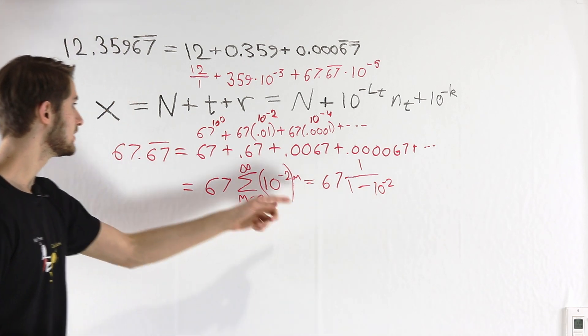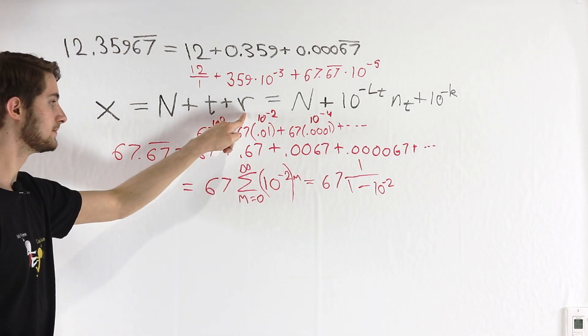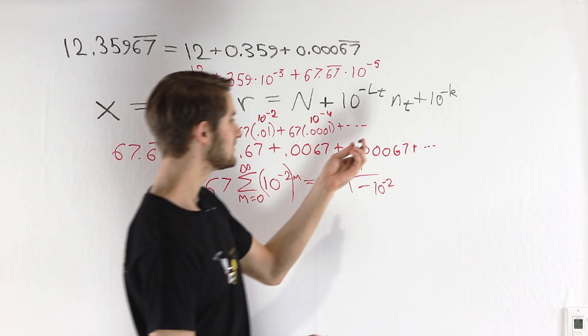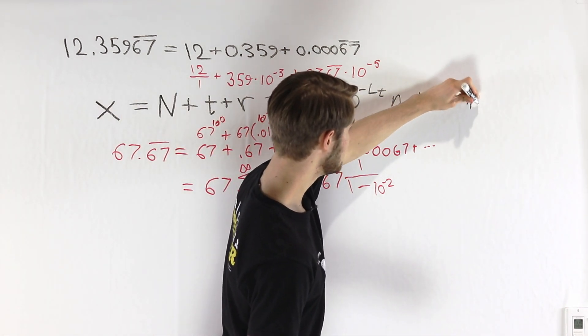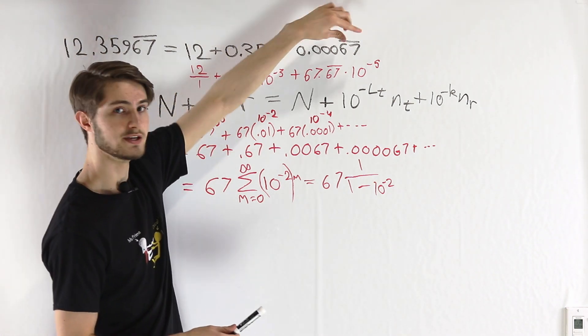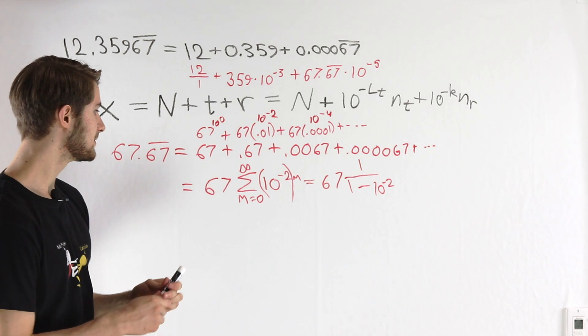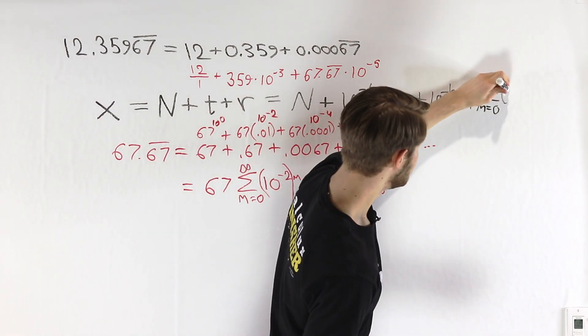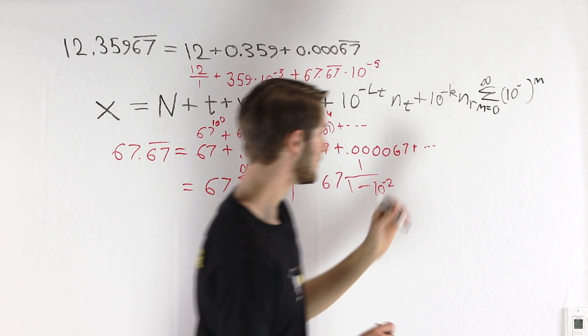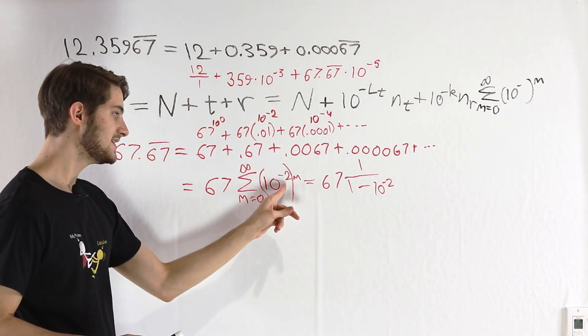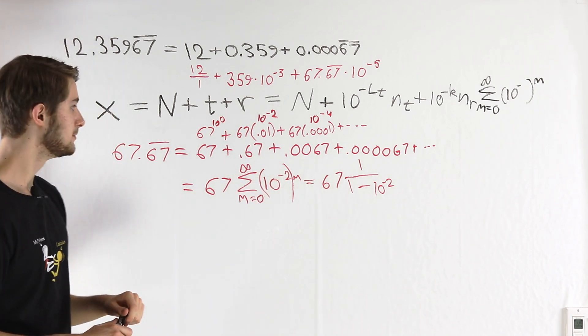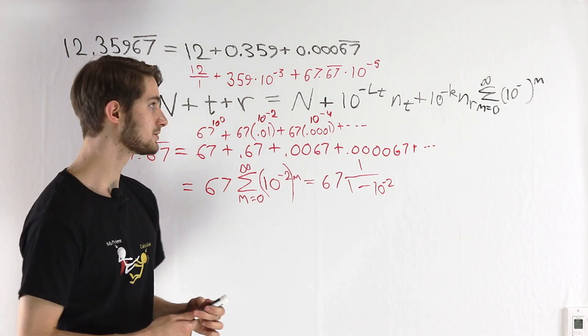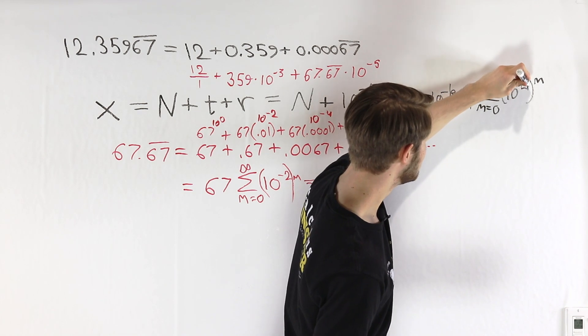How can we take this and write it for an arbitrary repeating decimal? All we have to do to answer that question is take all of the cases with 67 and replace it with the arbitrary number n_r, the digits of the repeating decimal. And then if we keep writing out what we have here, we'll have the sum from m equals 0 to infinity of 10 to the negative something to the power of m. Remember that 10 to the negative 2, we chose the number 2 there because the length of 67 is 2. 67 has two digits. For an arbitrary repeating decimal, it's going to have some length l sub r.